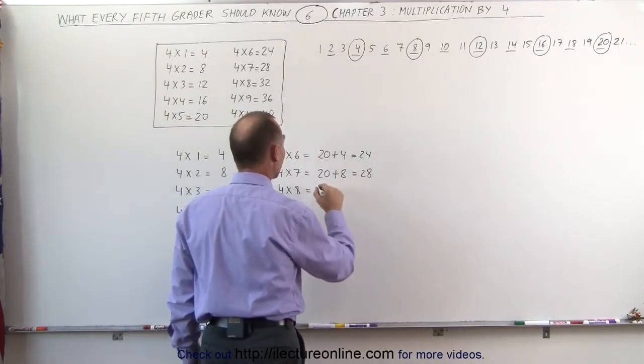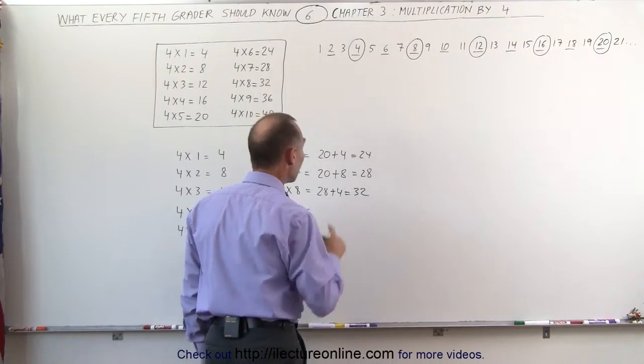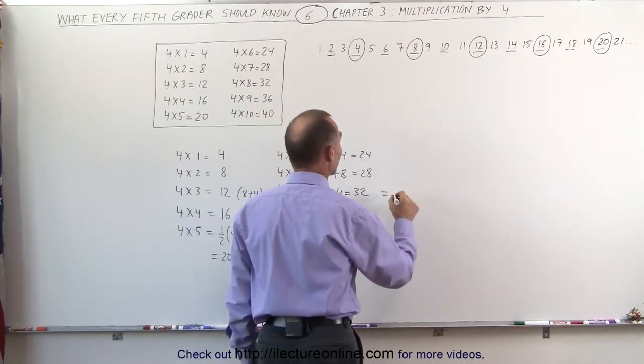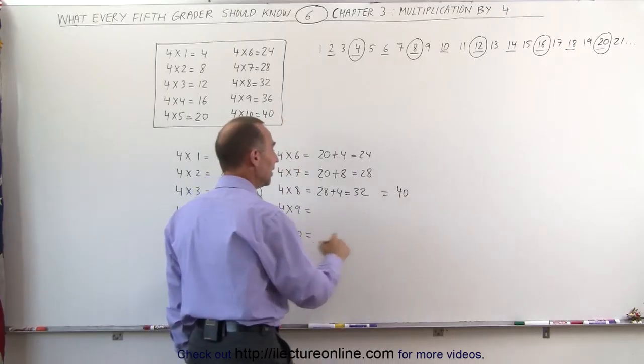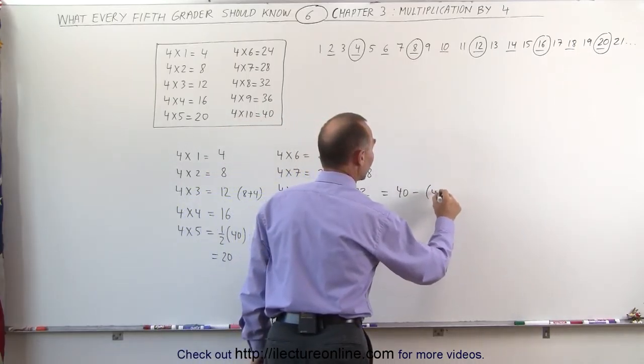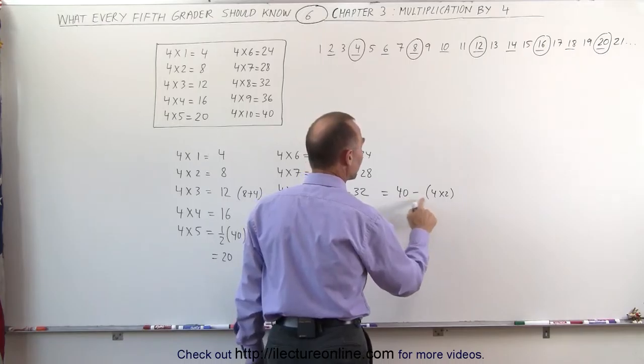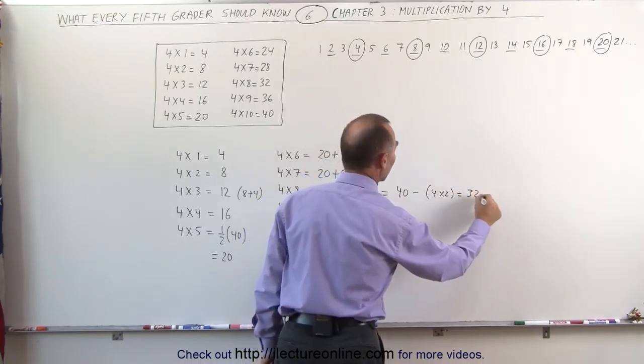Now, 4 times 8 would be your last answer, 28 plus 4, which is 32. Another way of looking at that is, this can be written as 4 times 10 minus 4 times 2. And that would be 40 minus 8, which is equal to 32.